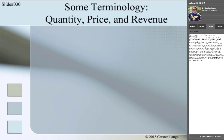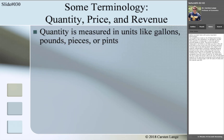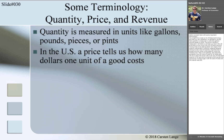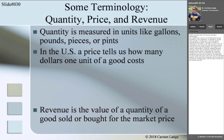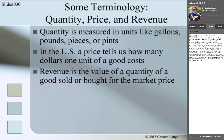Before we start, here is some important terminology. You might know most or all of these terms, but it is very important, therefore I decided to review it here. Quantity is measured in units like gallons, pounds, pieces, or pints. The price of a good is measured in US dollars, and tells us how much one unit of a good costs. Revenue must be distinguished clearly from quantity demanded or quantity supplied, because revenue is the value of a quantity of a good sold, calculated using the market price.